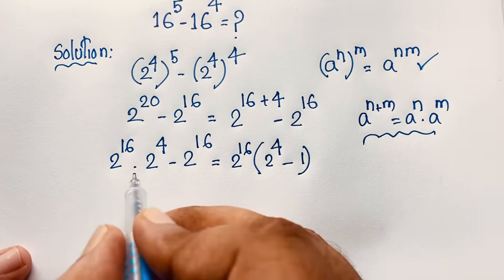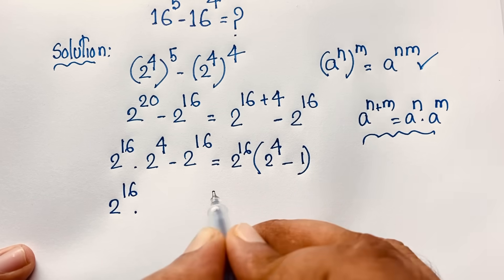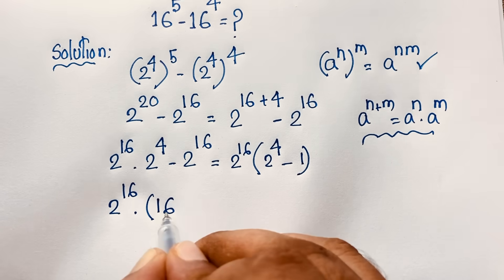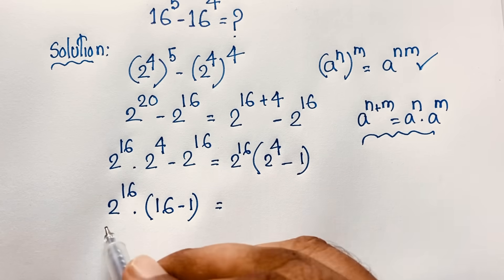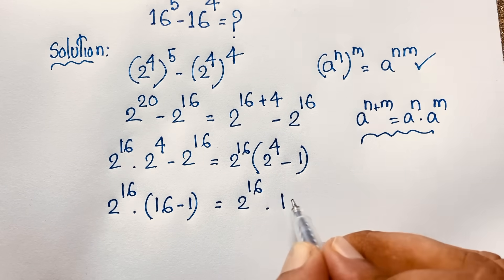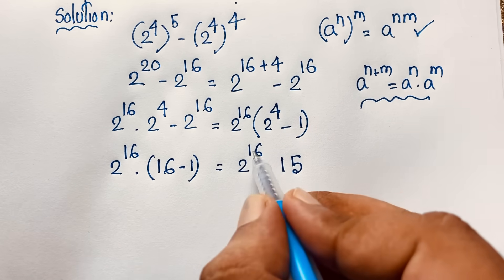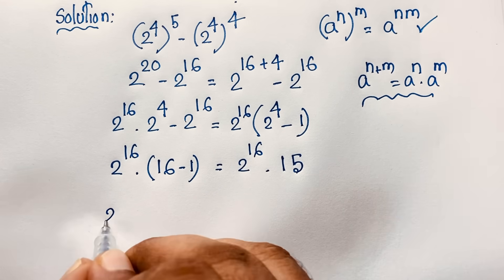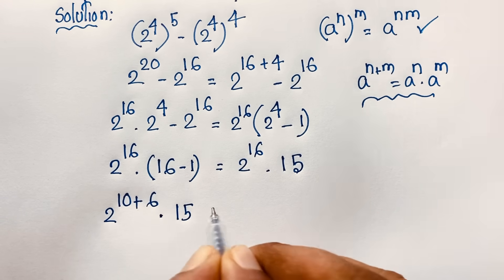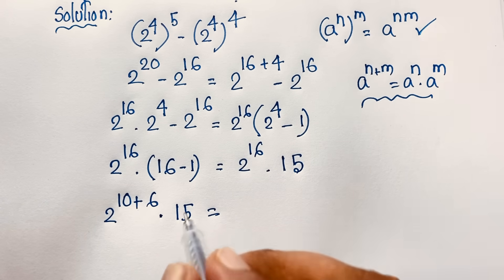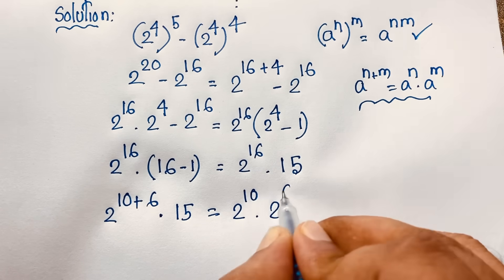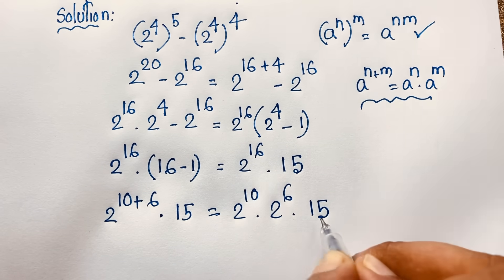So we have 2 to the power 16 times 2 to the power 4, and 2 to the power 4 is 16, and 16 minus 1 is 15. This gives us 2 to the power 16 times 15. Now 2 to the power 16 can be written as 2 to the power 10 plus 6, so applying the formula again, it becomes 2 to the power 10 times 2 to the power 6 times 15.